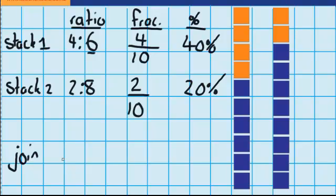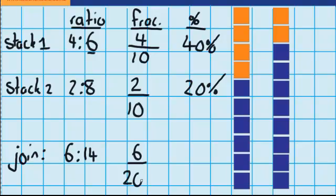Let's start by working out the ratio of orange for the two groups joined together. There are four orange plus two orange, which means there must be six. And there are eight blue plus six blue, which means there must be fourteen. So the ratio of orange to blue is six to fourteen. As a fraction, there are six orange over the total amount of blocks, and since I've joined the two groups together, that must be out of twenty.